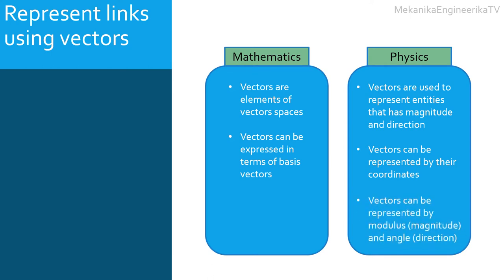In planar physics, the physical spaces and the corresponding mathematical spaces are two-dimensional. One possible basis is the polar reference. In that case, any vector is uniquely defined by its modulus and its angle. The modulus represents the magnitude or length, and the angle represents the direction.